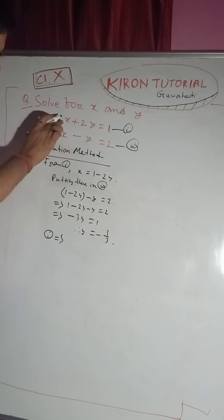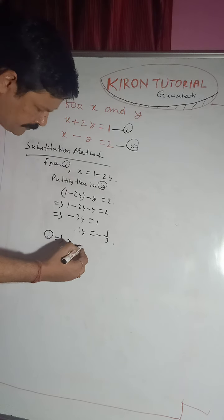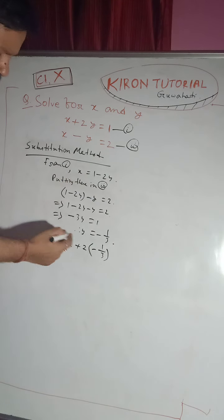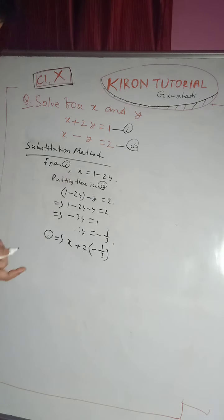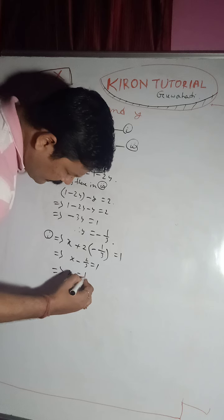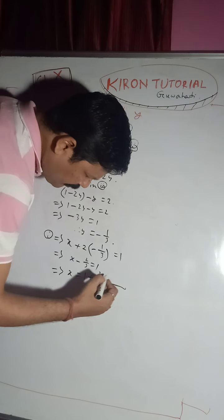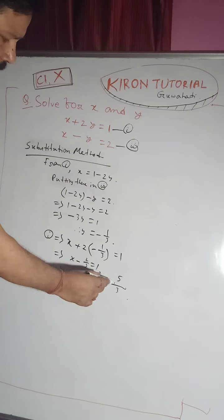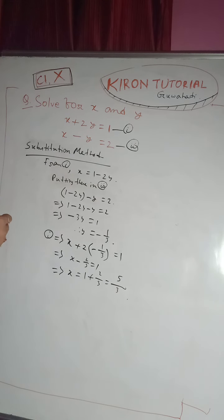Then putting this value of y back into equation 1. In place of y, we write minus 1 by 3. So x minus 2 by 3 equals 1, therefore x equals 1 plus 2 by 3, which means x equals 5 by 3.